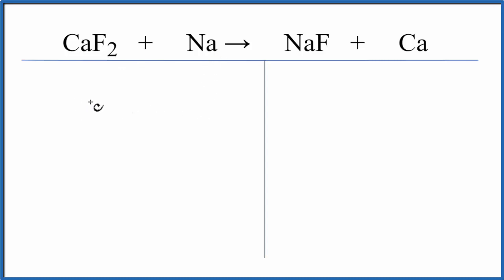Let's add the atoms up on both sides of the equation. Calcium, we have one of those. Fluorine, we have two of those, and then sodium, we only have one.